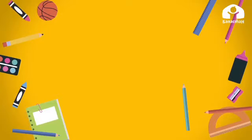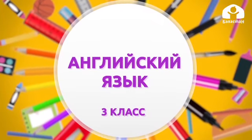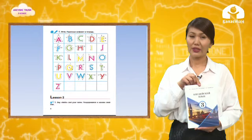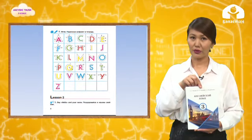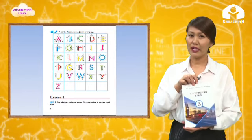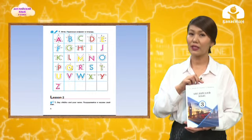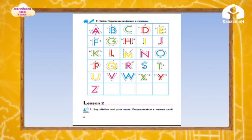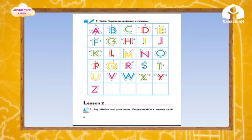Dear children, let's sing a song together. Dear children, this is our English textbook. Open your textbook, page 8, exercise number 7. Say with me the English alphabet: A, B, C, D, E, F, G, H, I, J, K, L, M, N, O, P, Q, R, S, T, U, V, W, X, Y, Z.